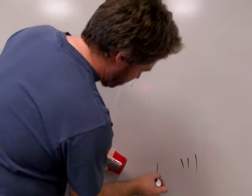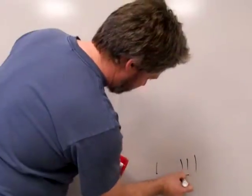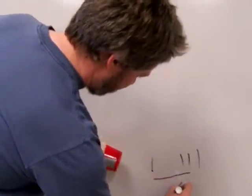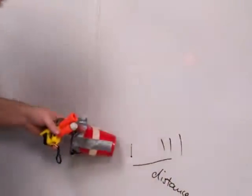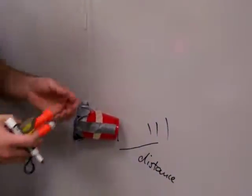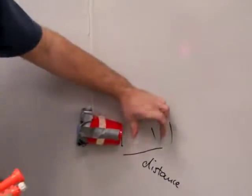So somewhere in there, and then this here would be the distance d that you have to measure. Notice, do not measure the angle because you use that distance d in order to calculate the angle.